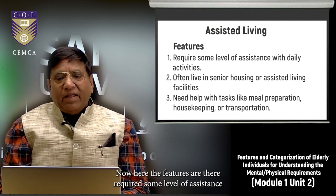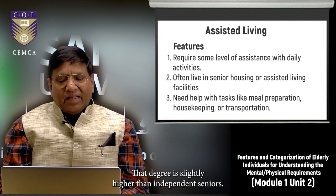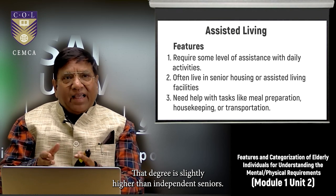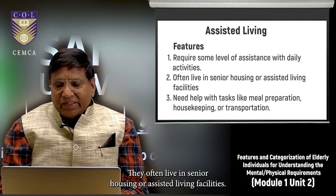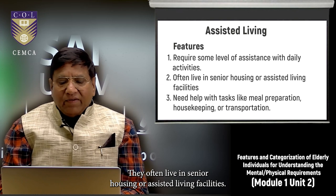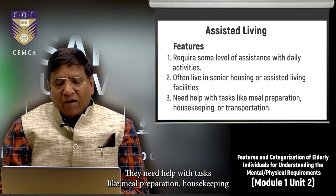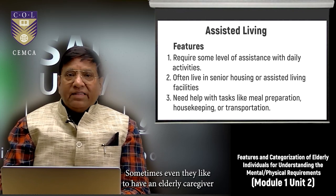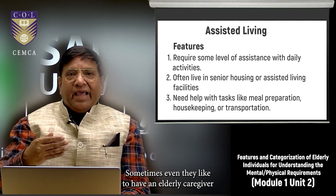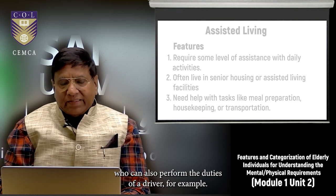The second category is assisted living. These individuals require some level of assistance with daily activities — slightly higher than independent seniors. They often live in senior housing or assisted living facilities and need help with tasks like meal preparation, housekeeping, transportation, and sometimes even require a caregiver who can also serve as a driver.